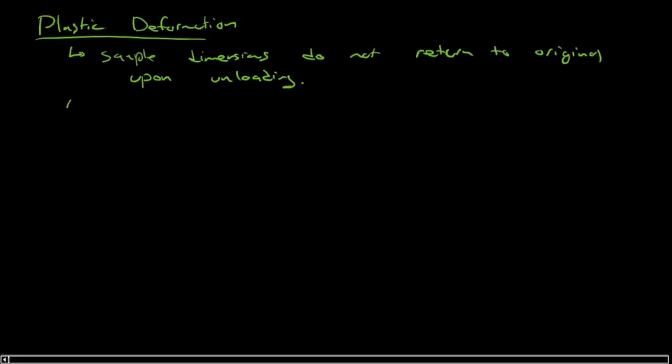So sample dimensions do not return to original. In fact, we could do the same thing we did for elastic deformation. And we could say that has to mean that at the atomic level, atoms or molecules, if we're going to be broad here about plastic deformation, independent of the class of materials, so metal, ceramic, polymer molecules, move past one another.